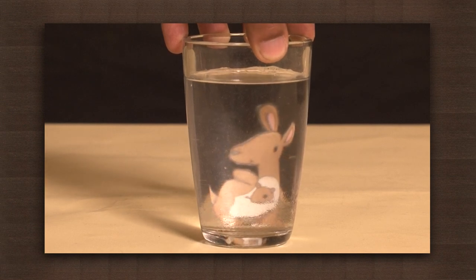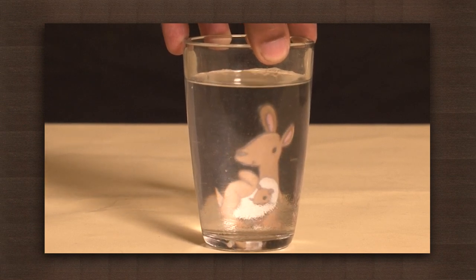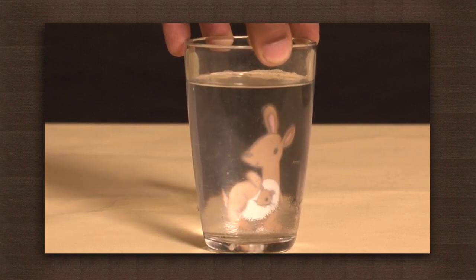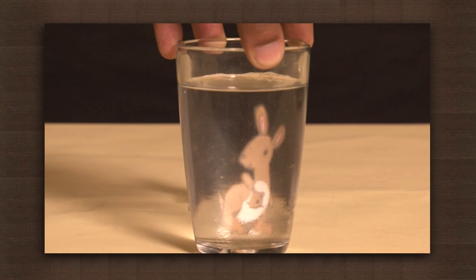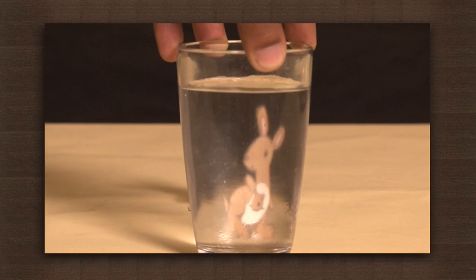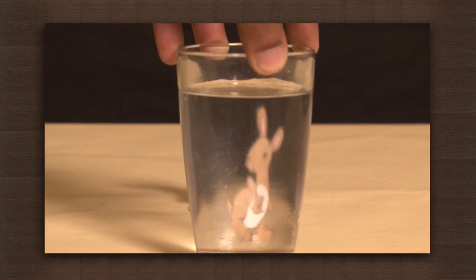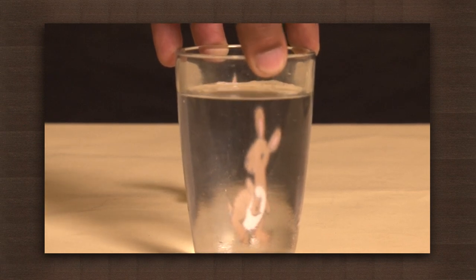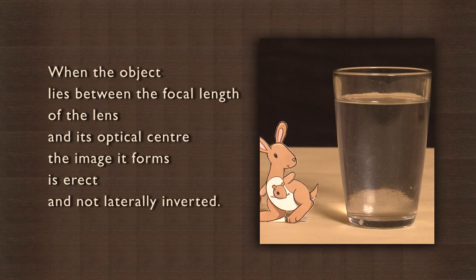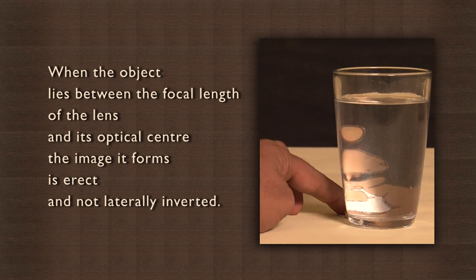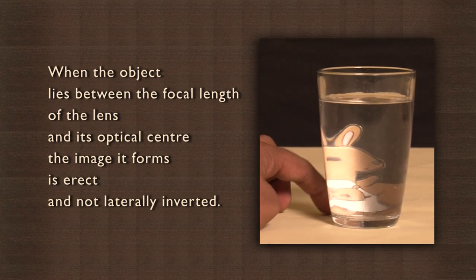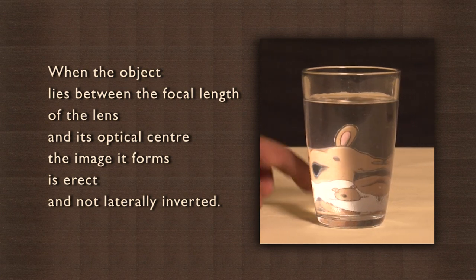This inversion of the image depends on the distance between the object and the lens — in this case, the glass and water, both of which are transparent. When the object lies between the focal length of the lens and its optical center, the image it forms is erect and not laterally inverted.